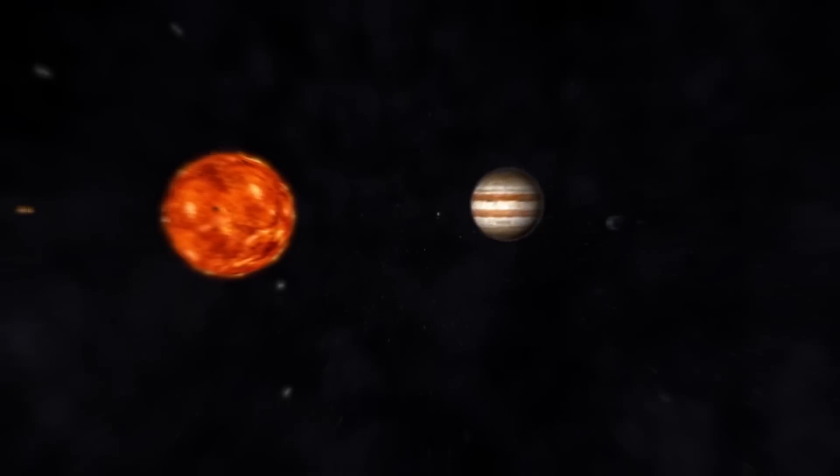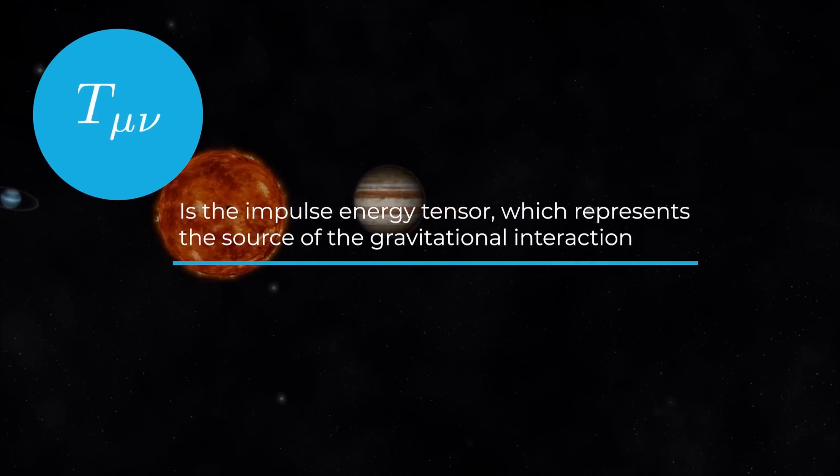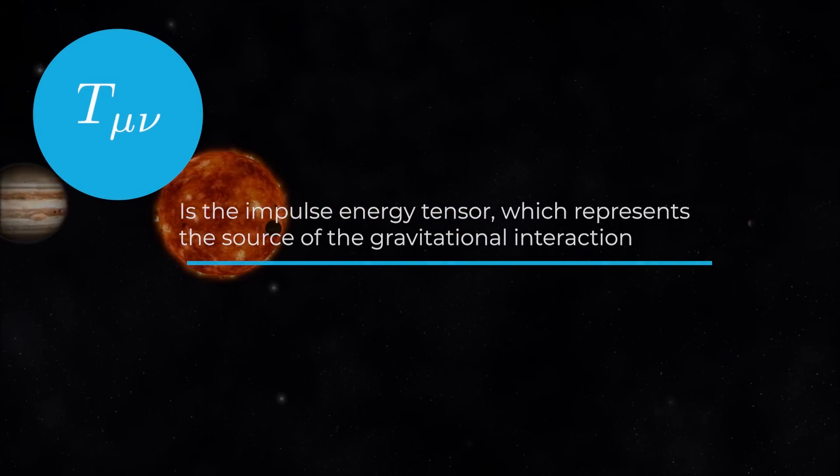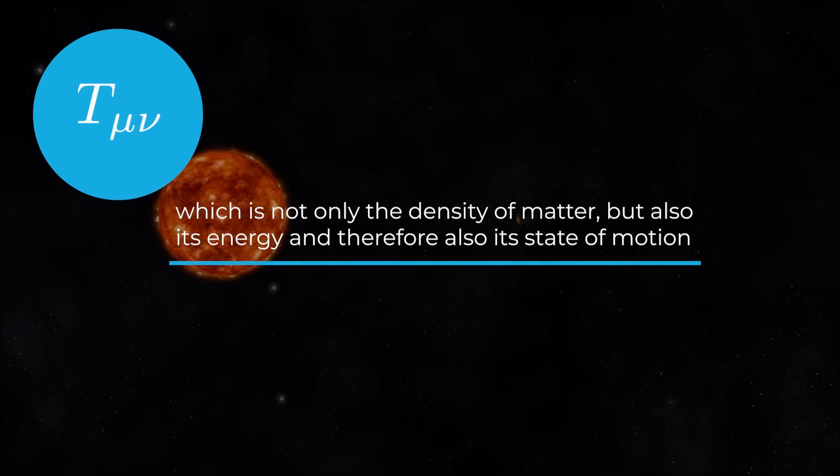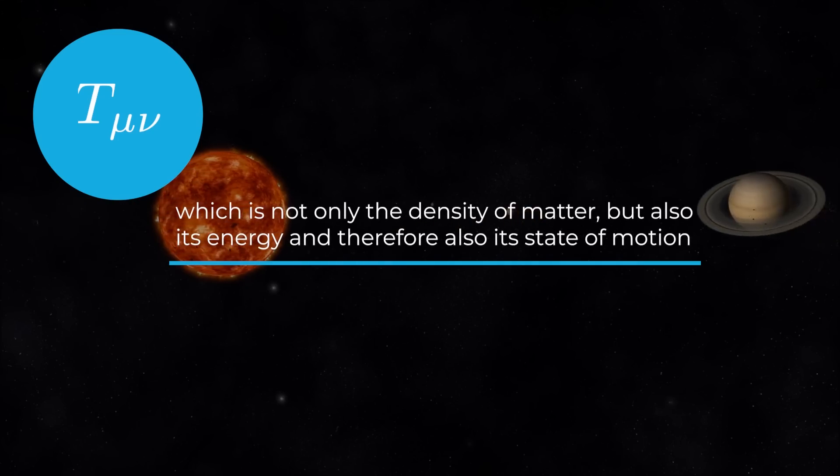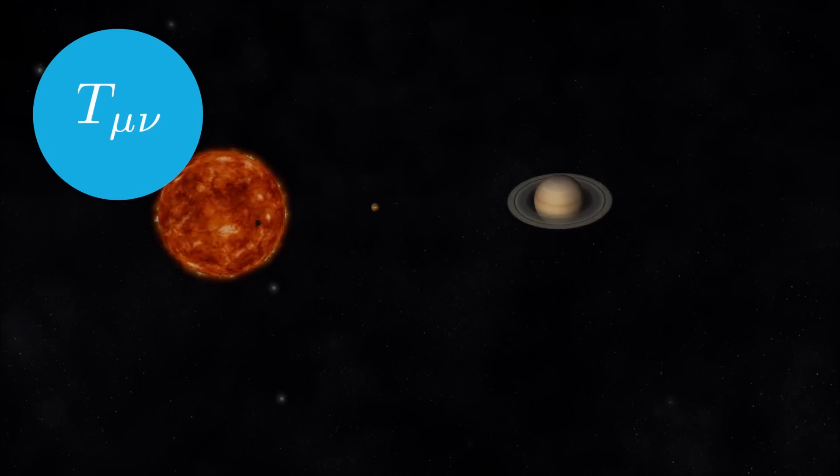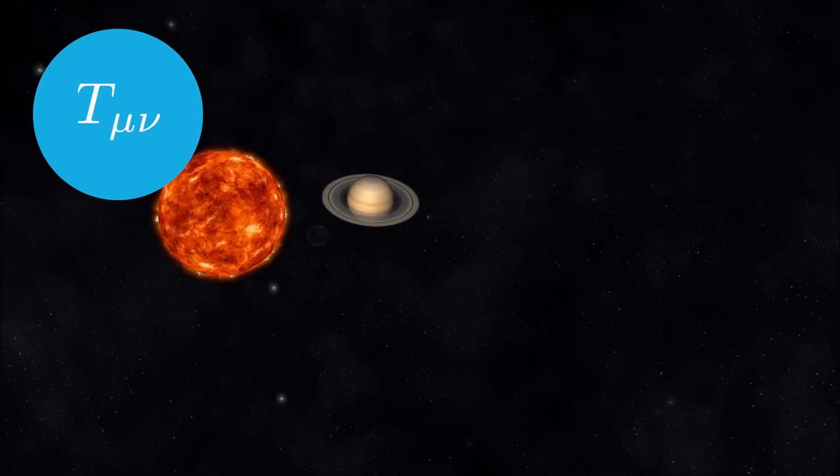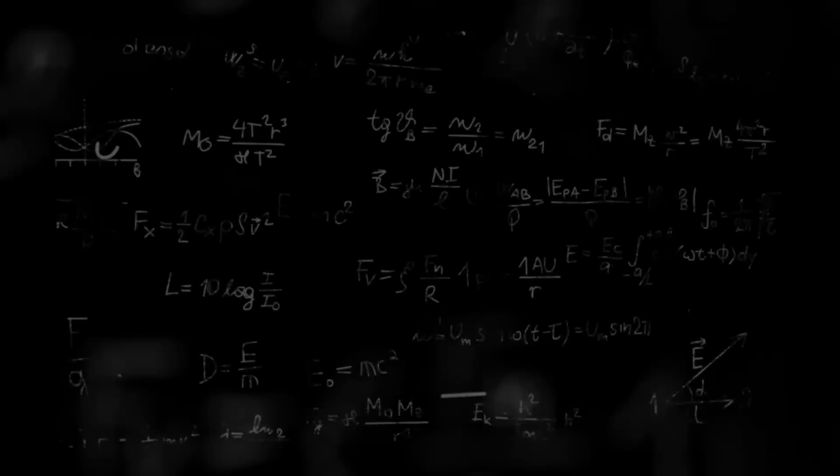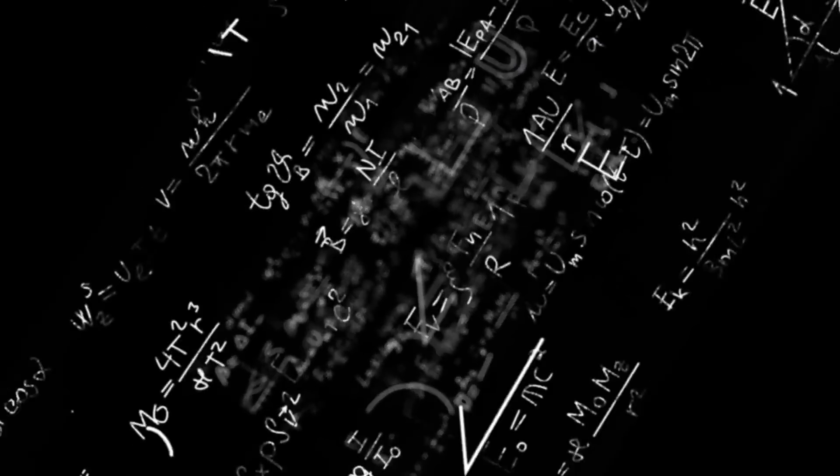G is the universal gravitational constant and c is the speed of light in a vacuum. T_μν is the impulse-energy tensor, which represents the source of the gravitational interaction, which is not only the density of matter but also its energy and therefore also its state of motion. In practice, the mass that generates the gravitational field is contained in T_μν.